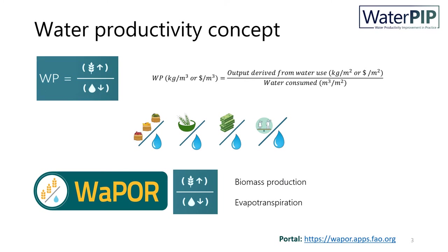Water productivity is defined as the output derived from the use of water, which can be in terms of biophysical quantities such as tons or kilos of biomass or yield, or socio-economic indicators such as jobs or economic value, divided by the water consumed per unit of output. In this video, we will be using the VAPOR definition of gross water productivity, which can be directly obtained from the VAPOR database, defined as the biomass production over evapotranspiration.